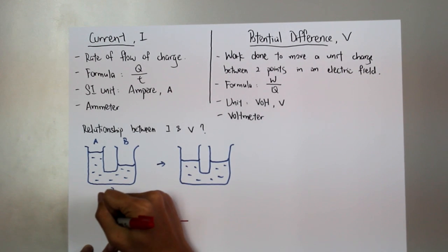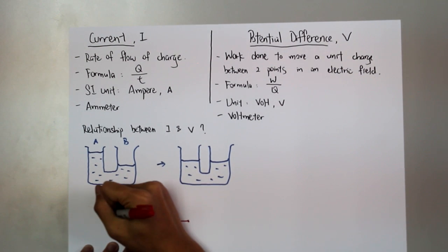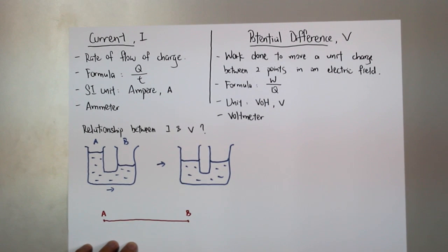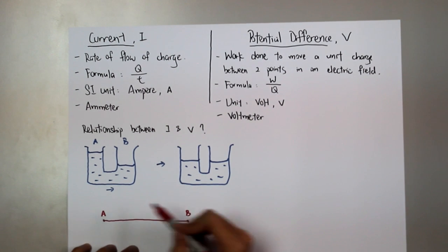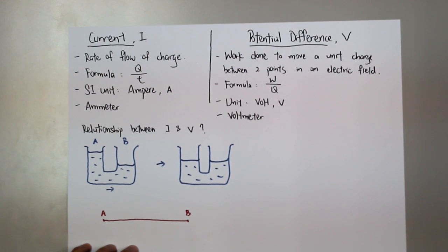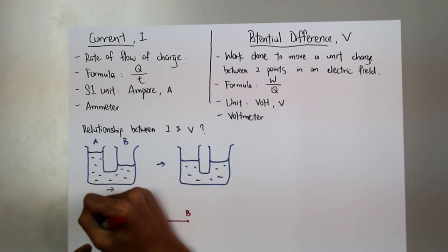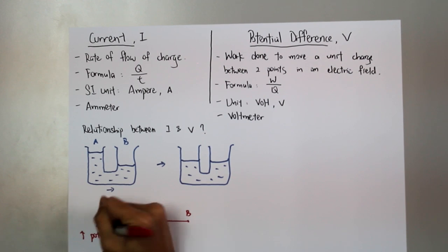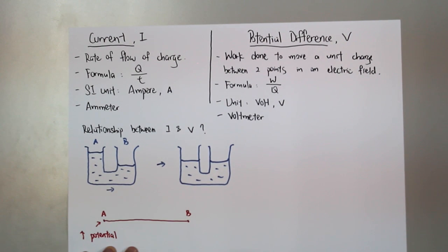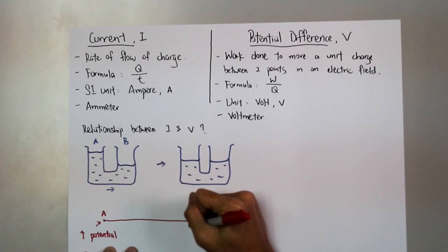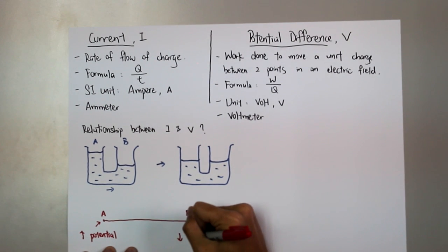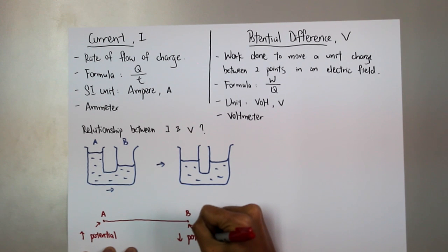The same goes to the current and potential difference in a wire. This is the wire we use. I label here as A, and label here as B. When a power supply is connected to this wire AB, it creates a higher potential at point A.